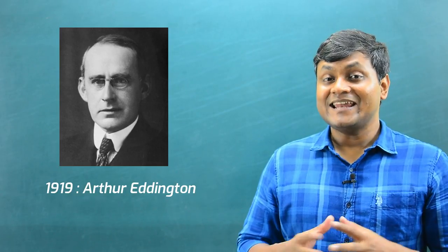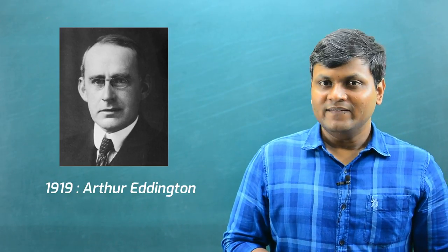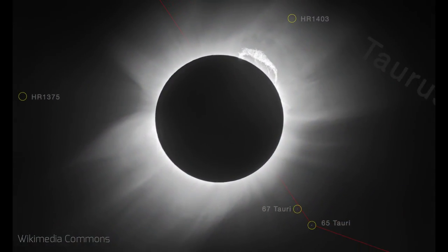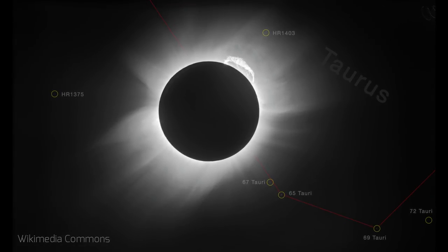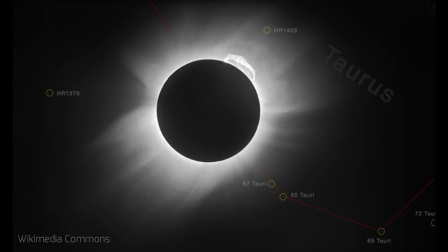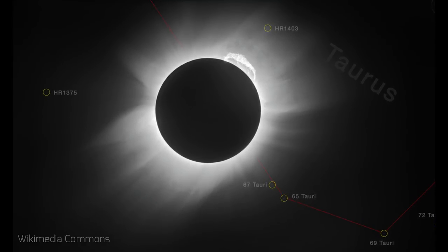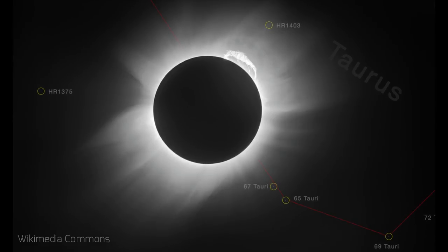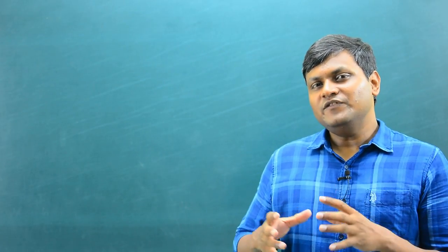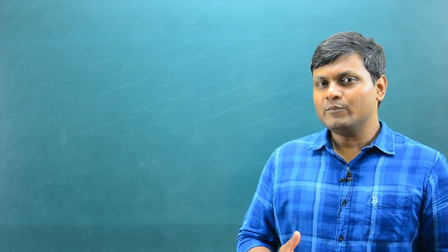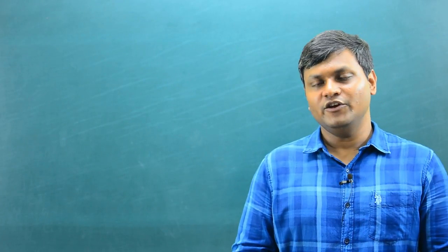This was experimentally verified by Arthur Eddington and his colleagues in 1919, when they looked at the positions of various stars during a solar eclipse. By comparing star positions during the solar eclipse and at night when the sun was absent, they found a deflection exactly as predicted by the general theory of relativity, giving one of the first experimental demonstrations of its validity.